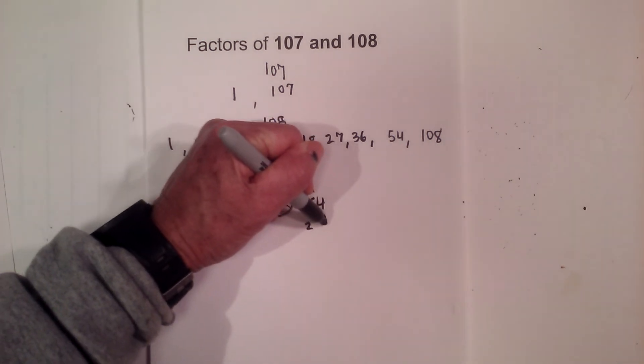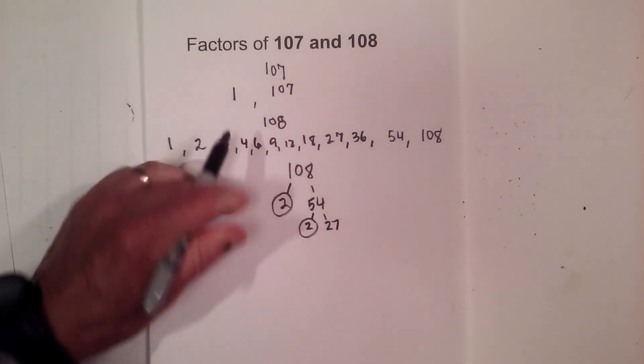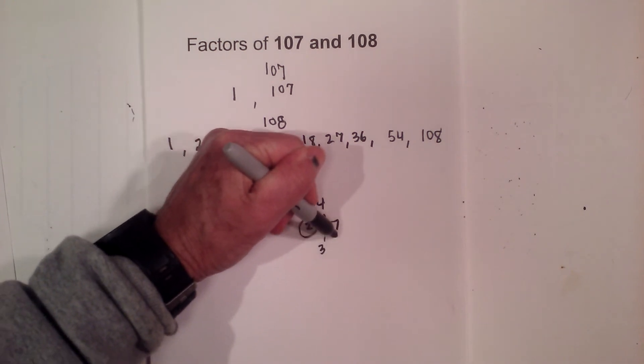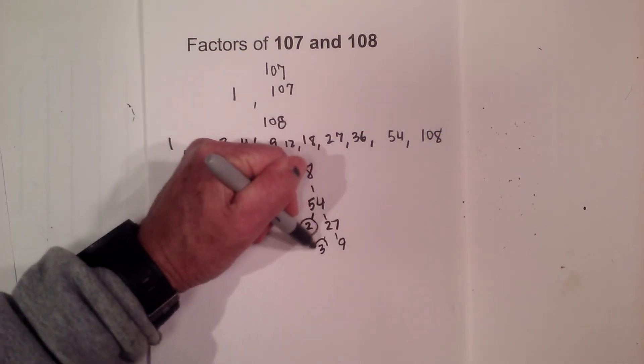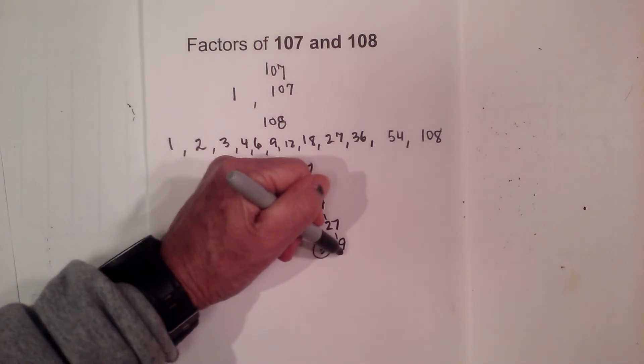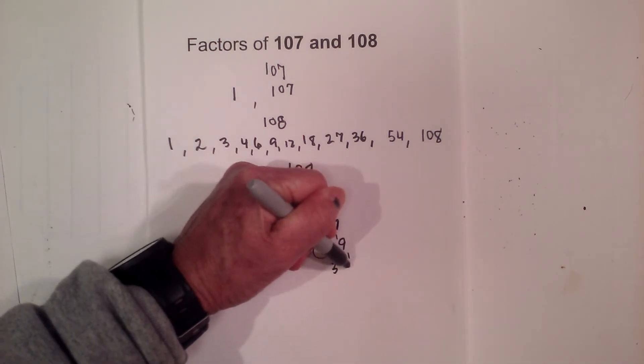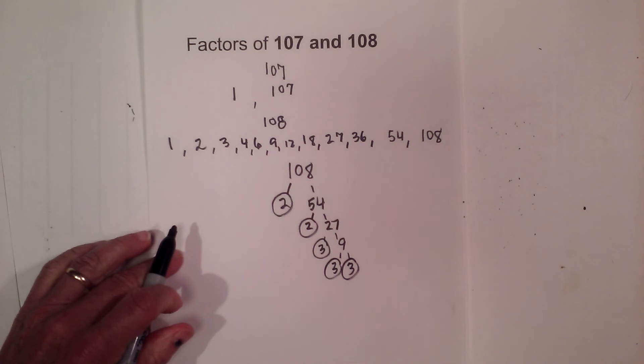Now let's try 2 times 27. Circle the 2 because that is prime. 3 times 9 is 27. Circle the 3 because that is prime. And now 3 times 3. Circle both of them because they are prime.